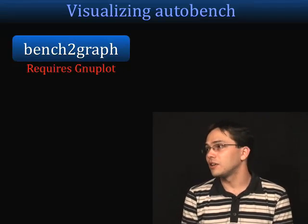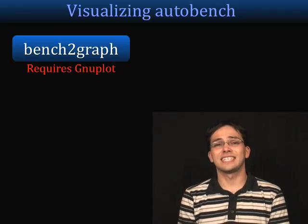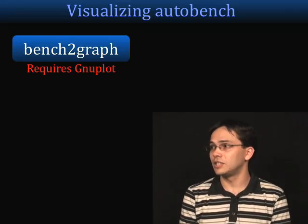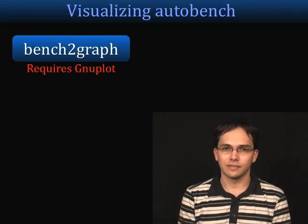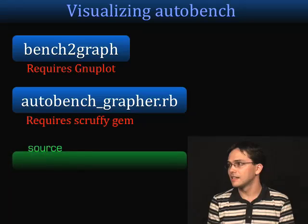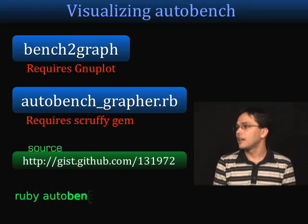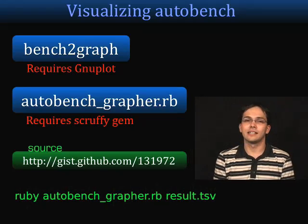Now that we have all this great data, let's figure out how to visualize and graph it. AutoBench comes with a command called abench2graph which will graph all of your results, but it requires GNU plot. I tried installing it using Mac ports and it installed a ton of extra libraries, then bugged out when it went to install GNU plot itself. So I decided to write my own grapher — simpler, fewer dependencies. All it requires is the scruffy gem, and you can get the source at this gist. Just run ruby autobench_grapher.rb and send in the tab-delimited result file, and it gives you some very pretty graphs.